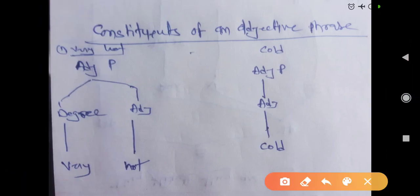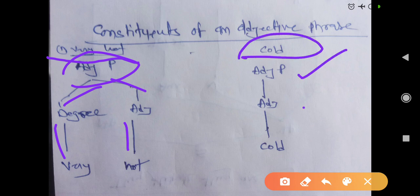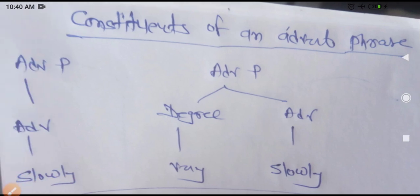Next, adjective phrase. When you talk about adjective phrase, the example is 'very hot.' It's an adjective phrase — 'very' is used as degree and 'hot' is the adjective. If it is only 'cold,' then that's an adjective phrase with just the adjective 'cold.' This way you can segregate the constituents of adjective phrase.